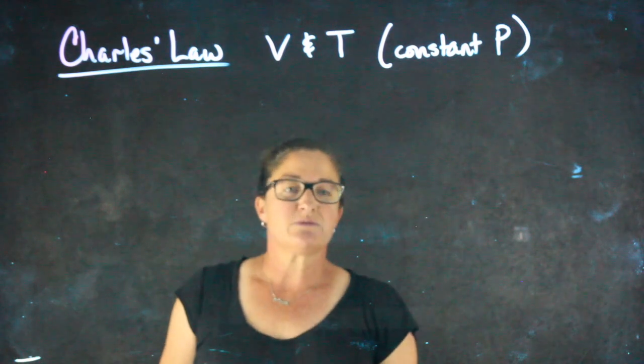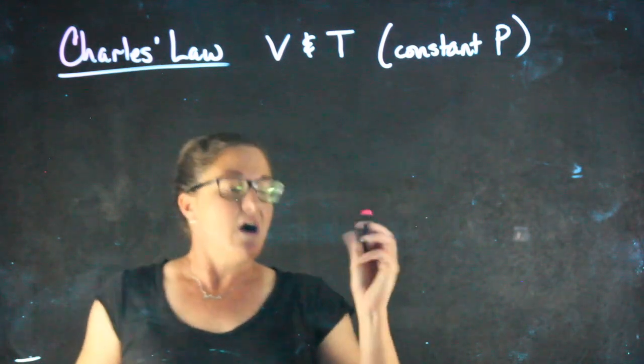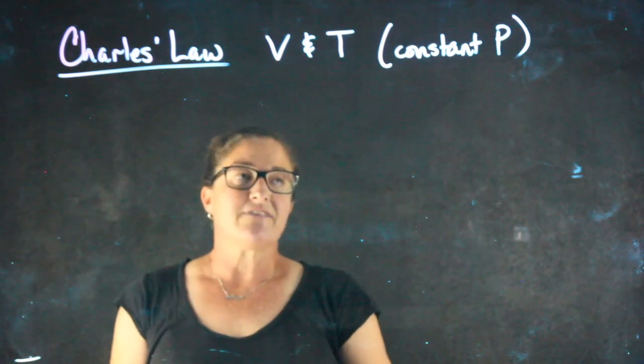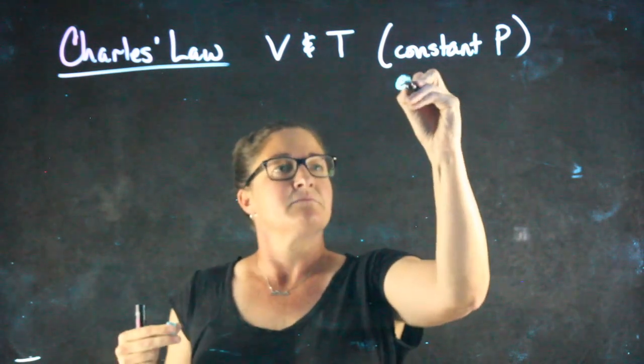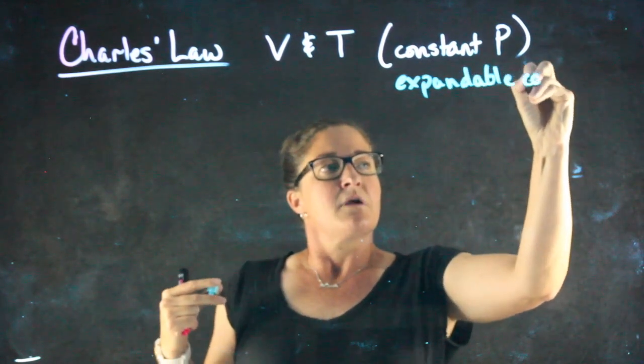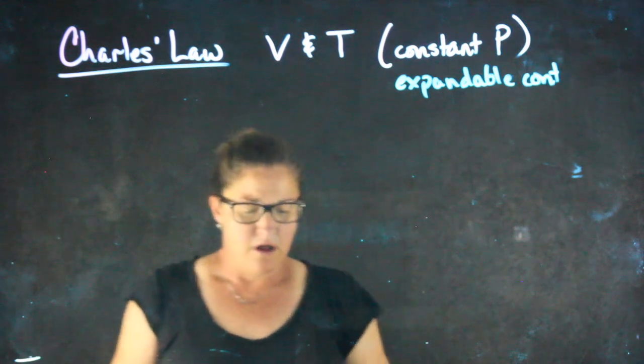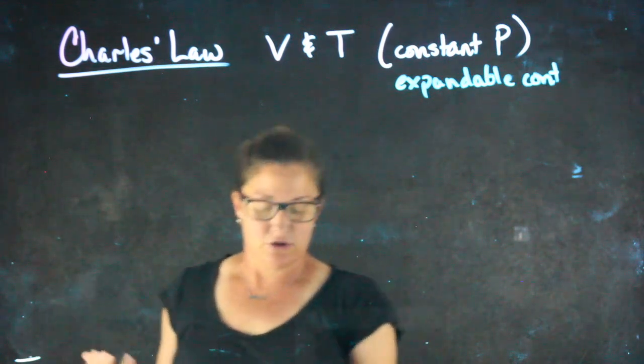Charles' law is the relationship between volume and temperature assuming a constant pressure. So a constant pressure means we have a container that can expand. A good example of an expandable container would be like a balloon or a bag of potato chips.